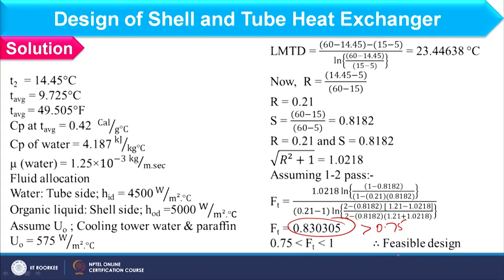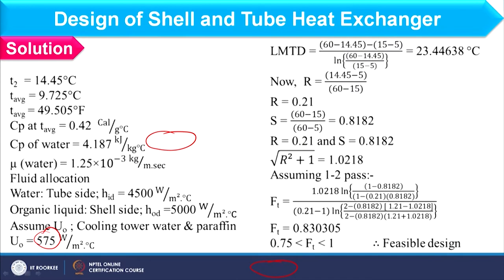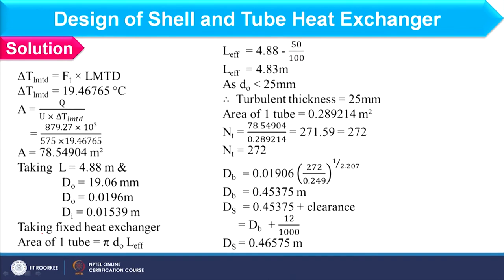Next, we find the assumed overall heat transfer coefficient U₀ from the graph. Considering the fluid combination, the assumed value of U₀ comes as 575 W/m²°C, as seen in the benzene-water case. With the LMTD value, the FT correction factor, and the overall heat transfer coefficient, we can now find the heat transfer area as 78.549 m². Tube length and diameter are chosen in the same manner as discussed in Lecture 15.